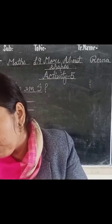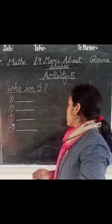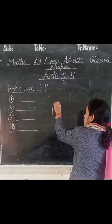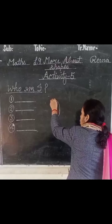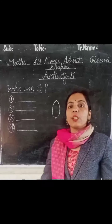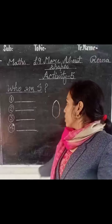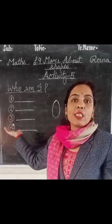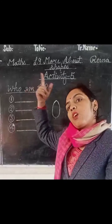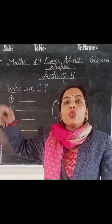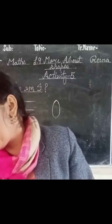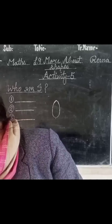Next you have been given the oval shape — like this. The shape of an egg is an example of an oval shape. In an oval shape there are no corners at all.